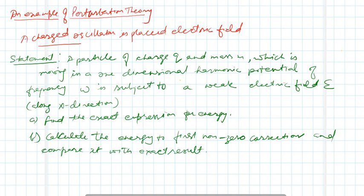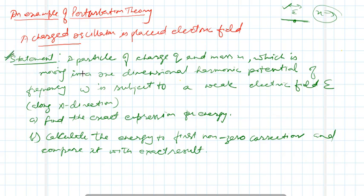In this example, a charged oscillator is placed in an electric field. A charged oscillator means the charge is oscillating like an oscillator. When it is kept inside the plates and across those plates some periodic potential is applied, and when some external field is applied along the x-axis, we ask how this electric field will affect its energy.